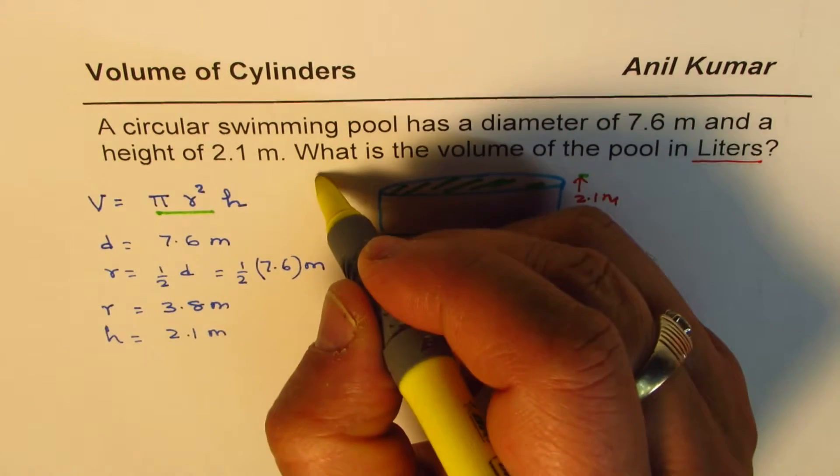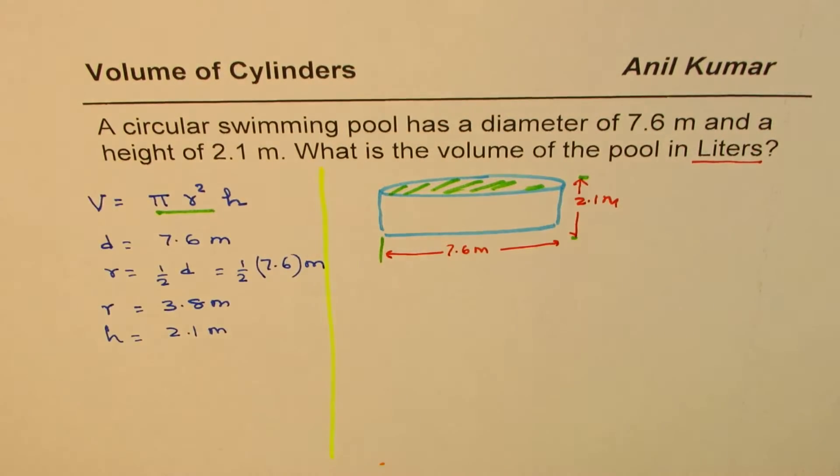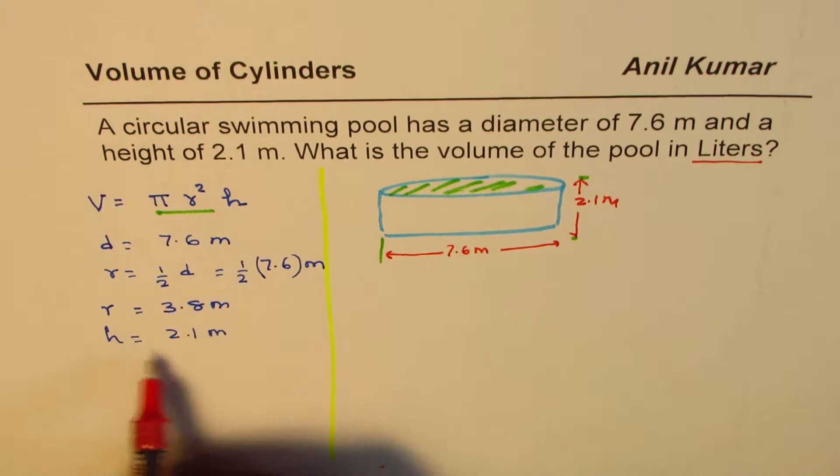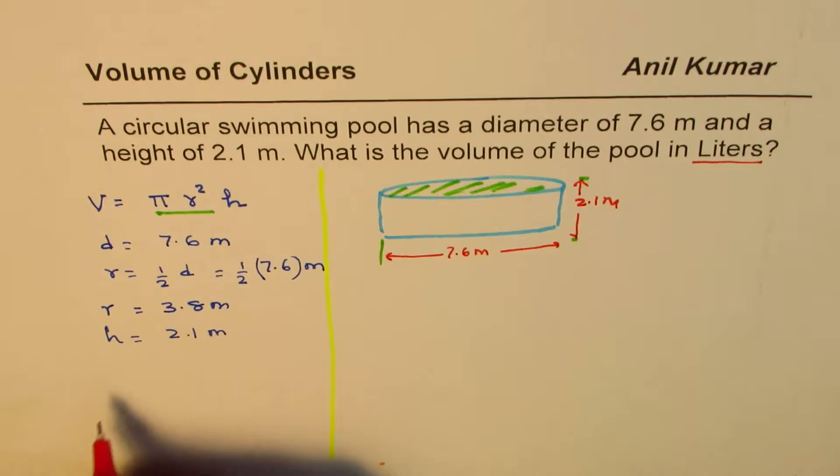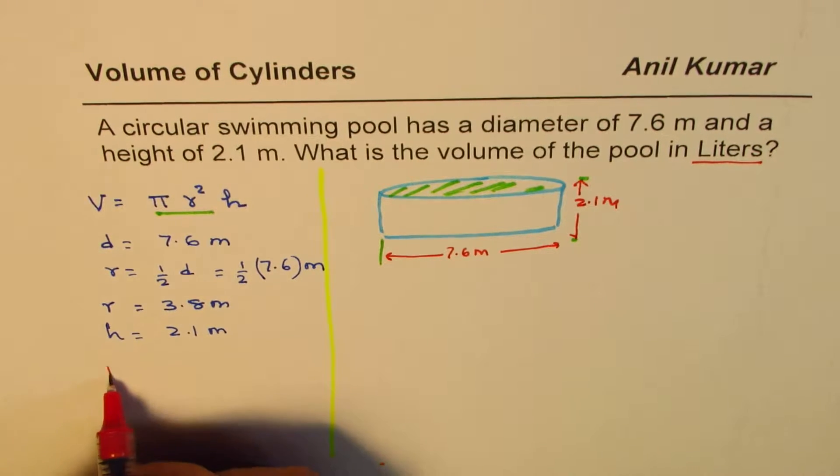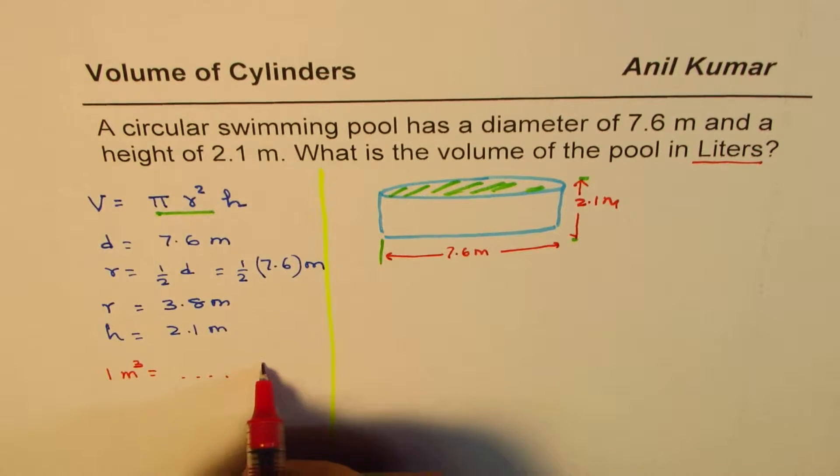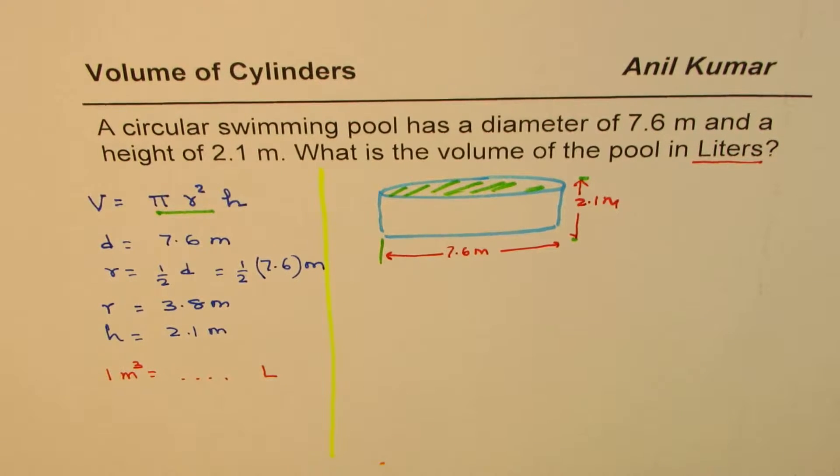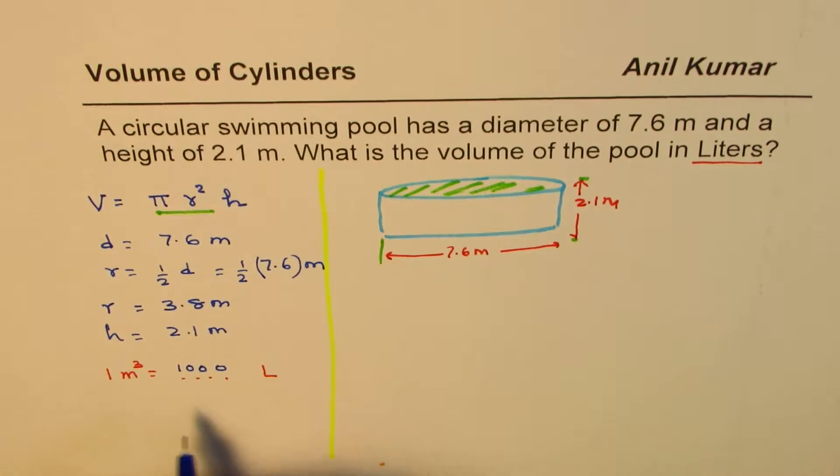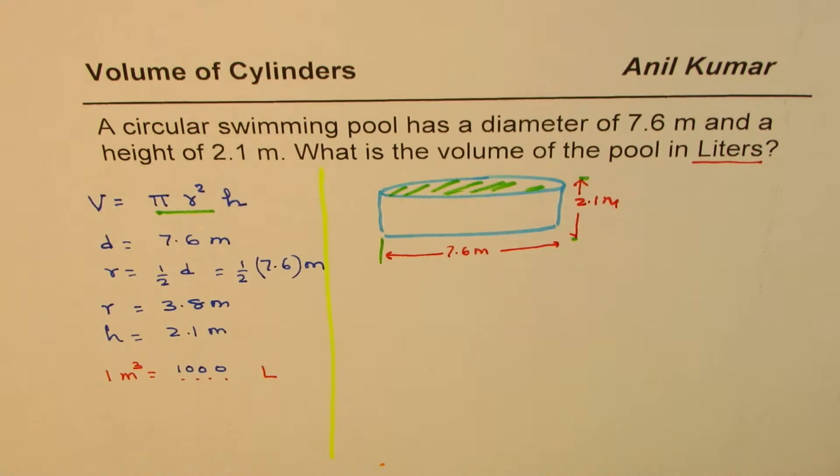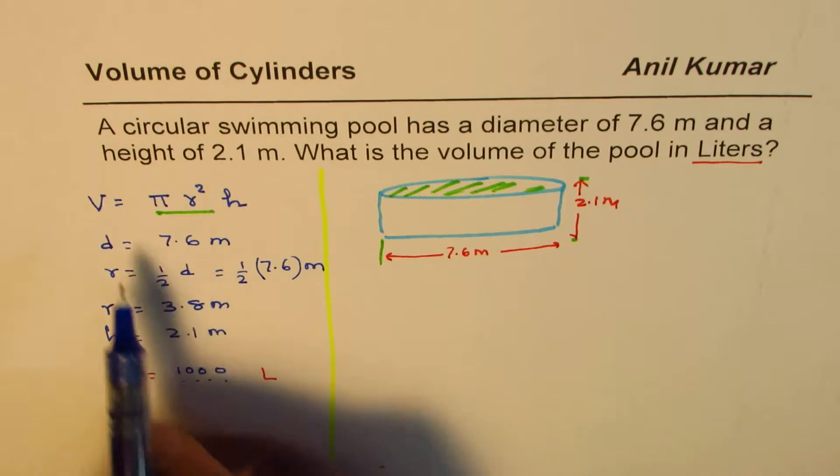Let's calculate the volume from all this given to us. Let me keep this side for formulas. Now as soon as I multiply, we'll get volume in meter cube, so we should also write down the formula for the conversion. One meter cube equals how many liters? Well, it is 1,000. One meter cube is 1,000 liters.